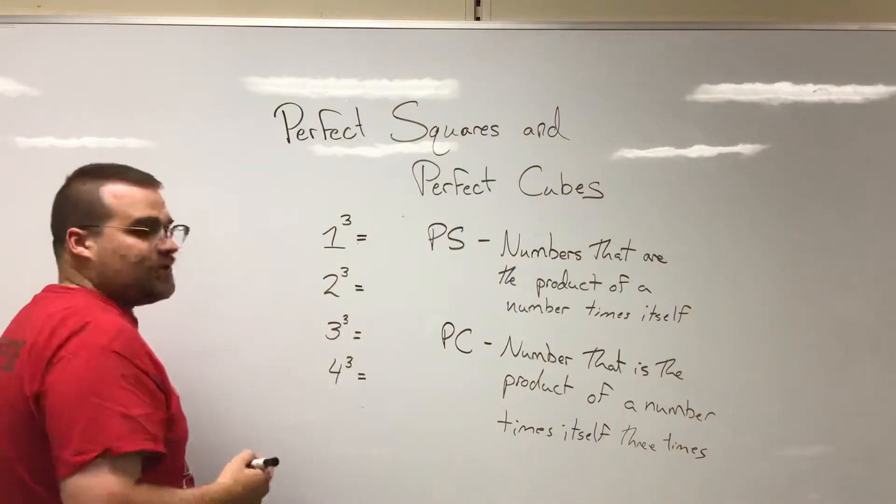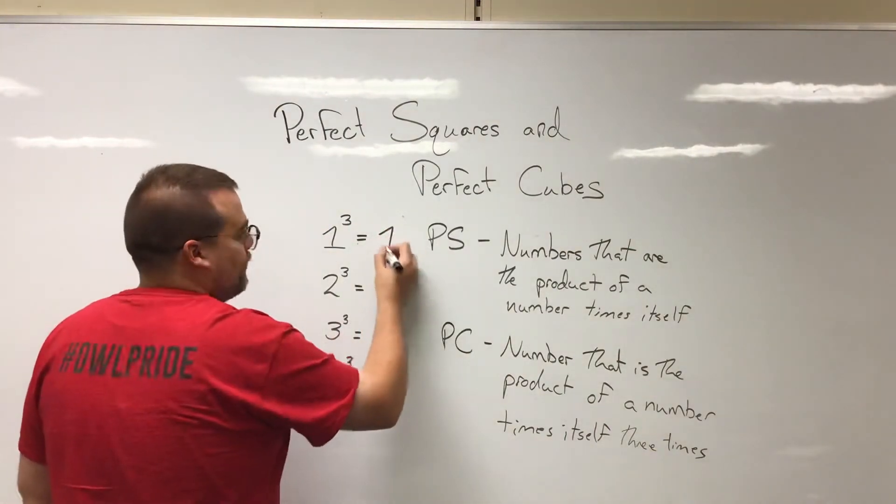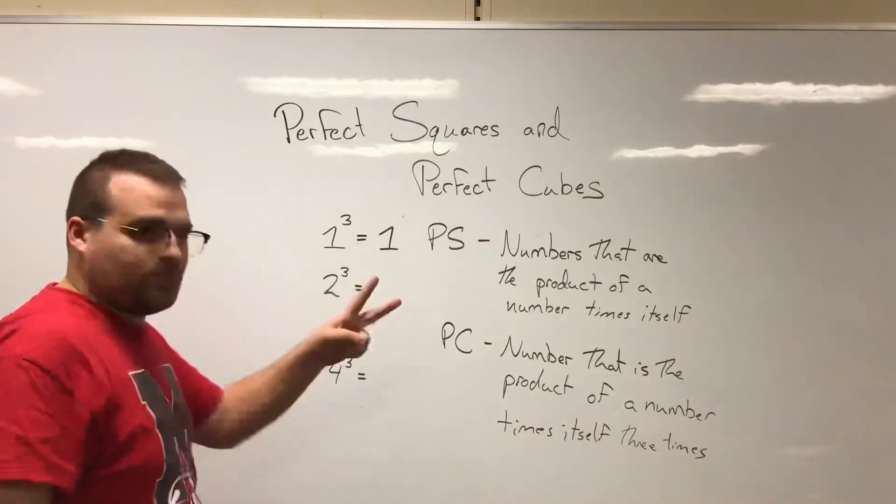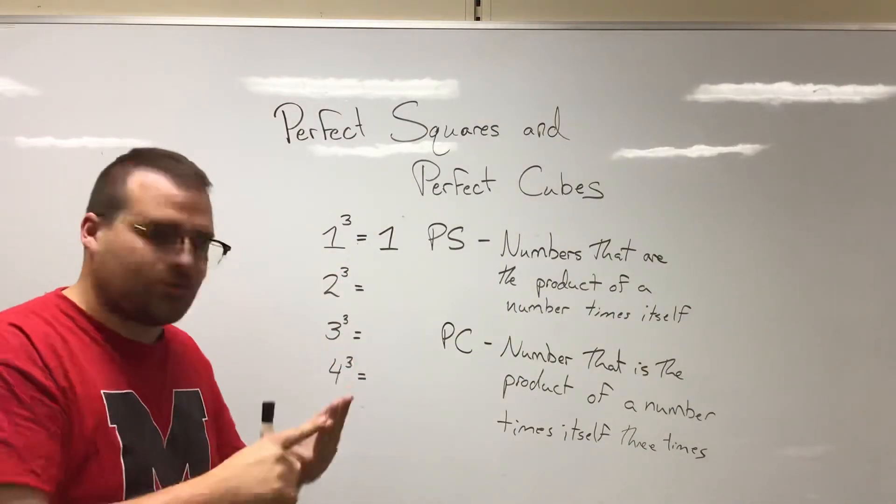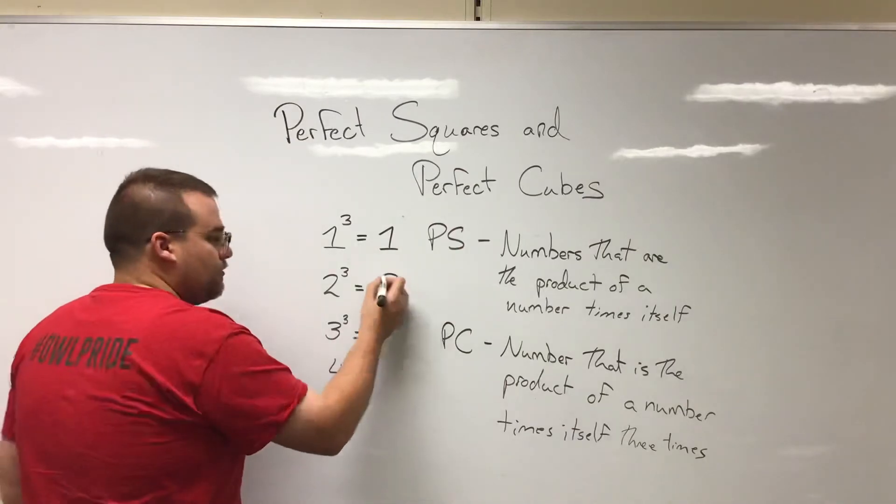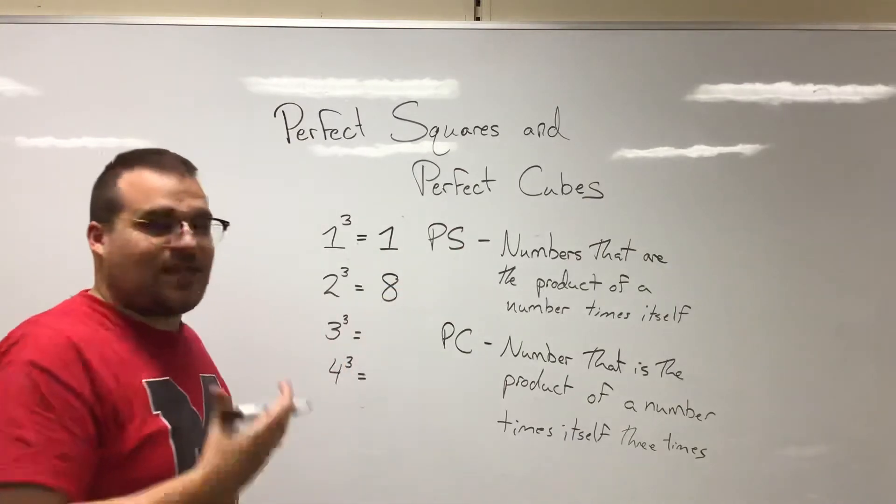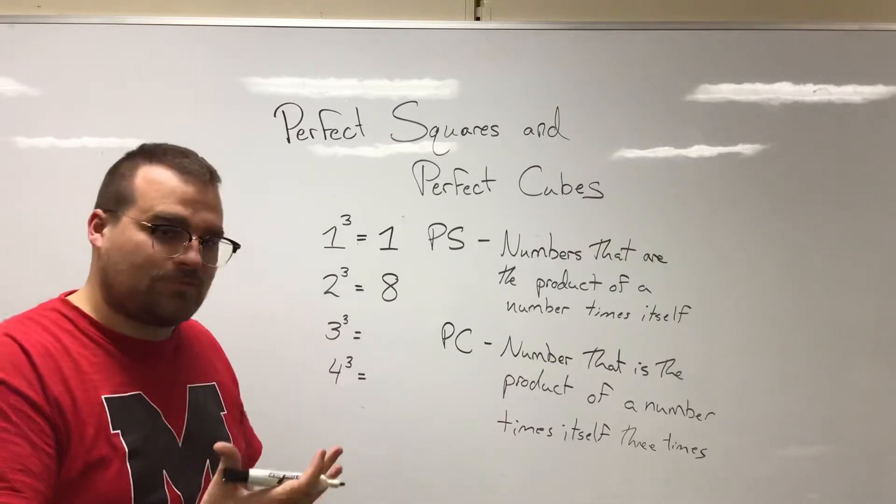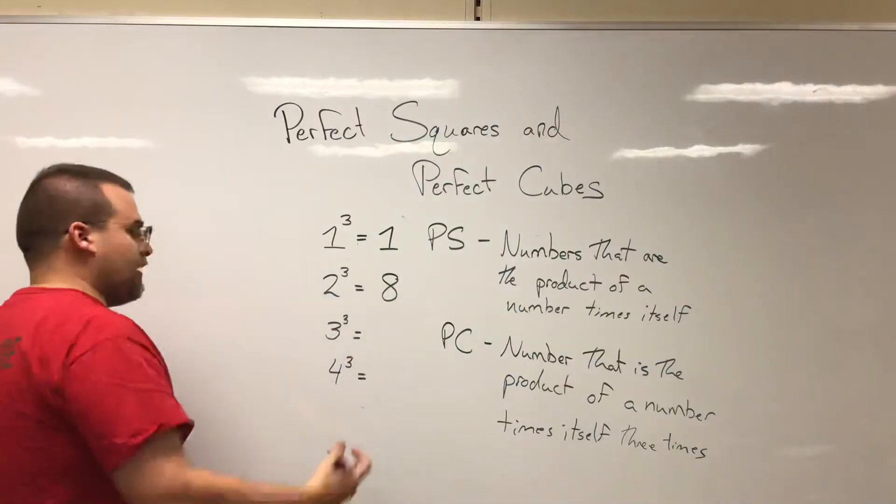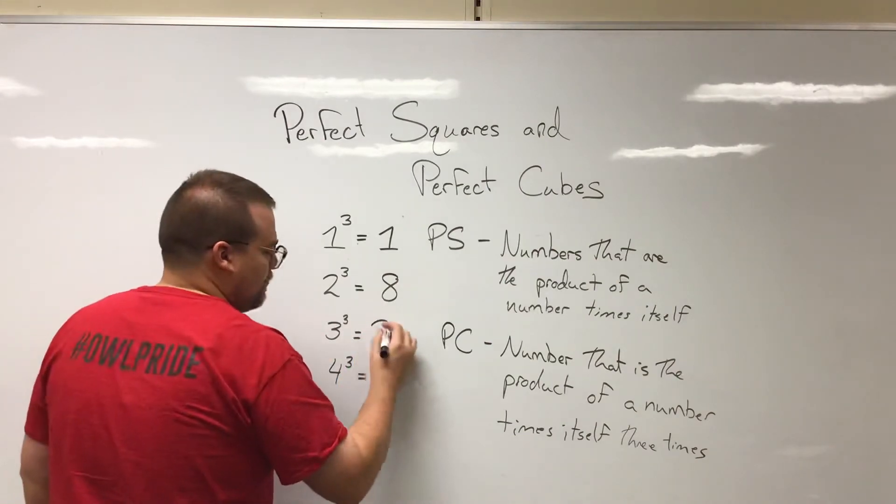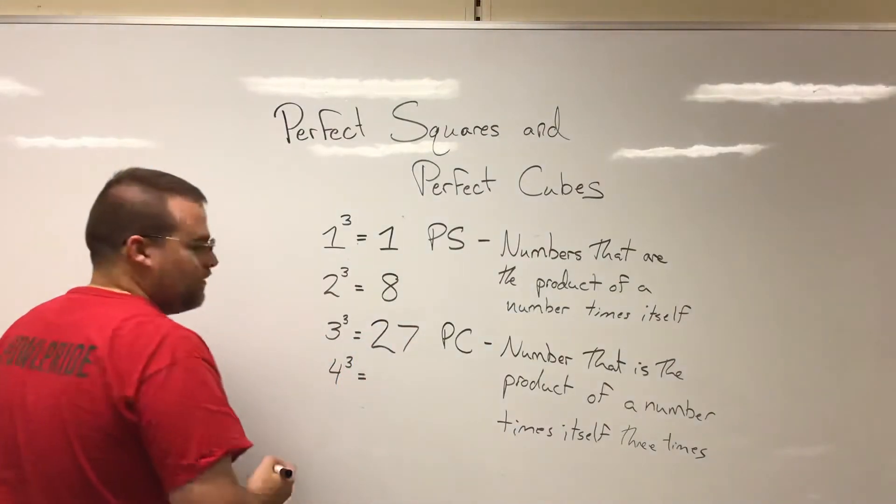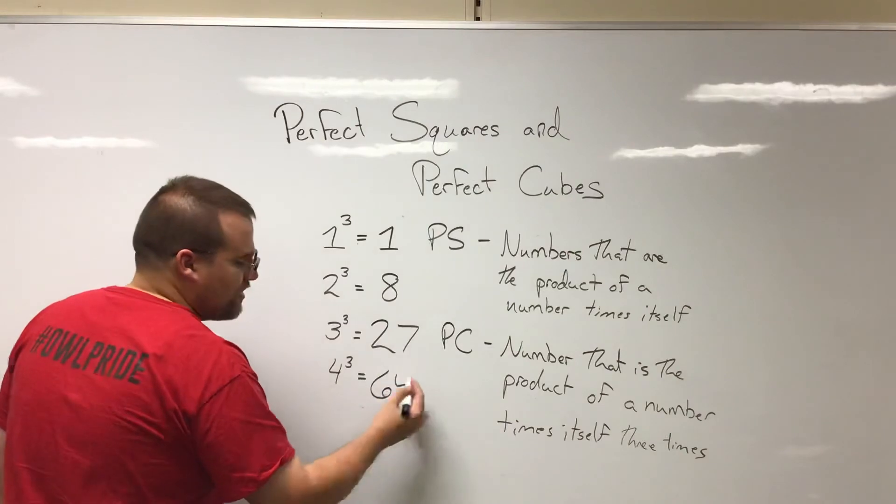So what is one times one times one? That's one. Two times two times two - two times two is four, times another two is eight. One thing that's important is not to accidentally add the number three times, but to make sure you're multiplying it three times. Three times three times three is 27. Four times four times four is 64.